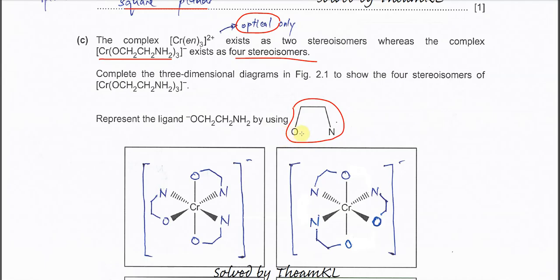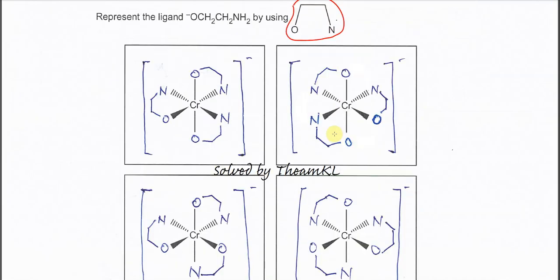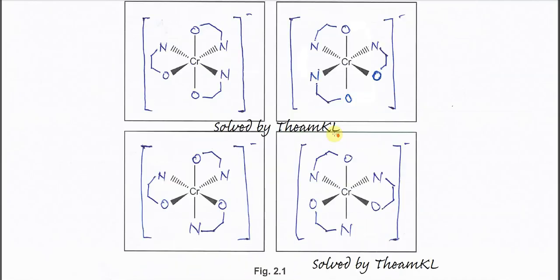This bidentate ligand has two donor atoms: the oxygen (oxide) and the nitrogen on the amine. You need to draw something like this. First, draw the mirror images. Start with this isomer and its mirror.